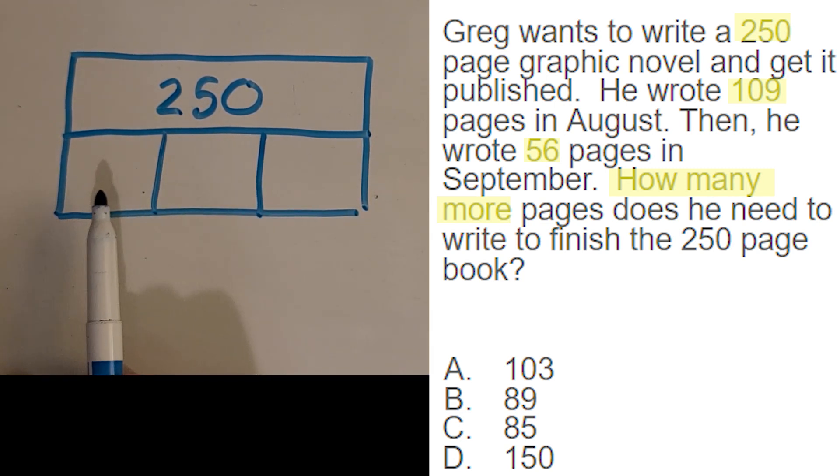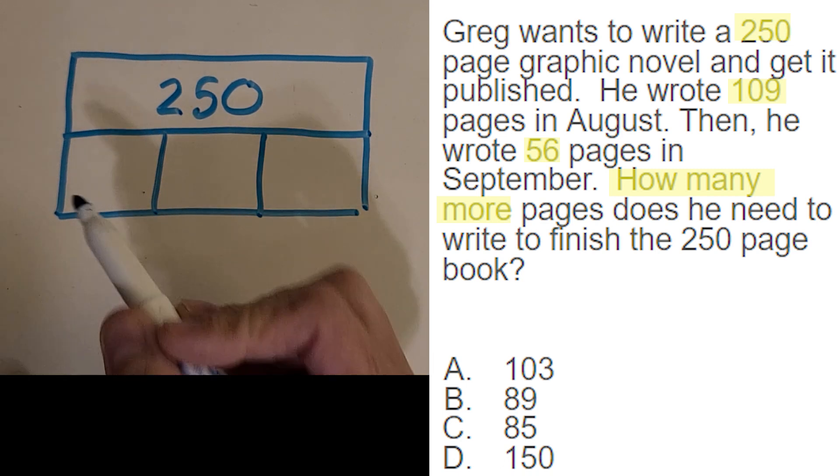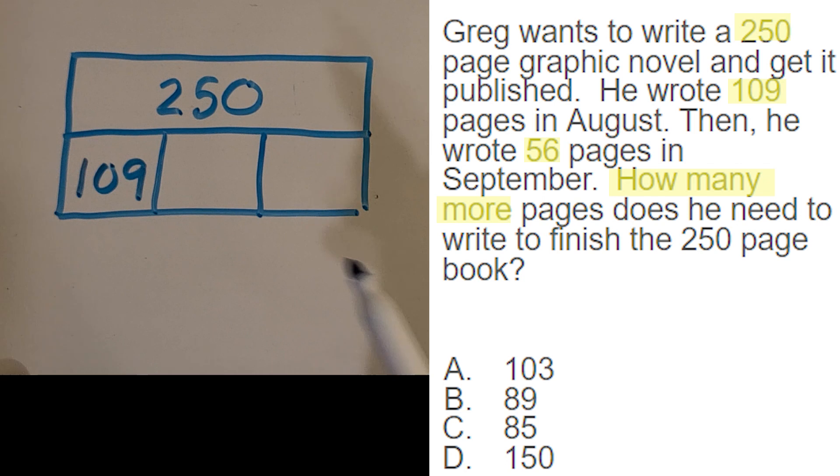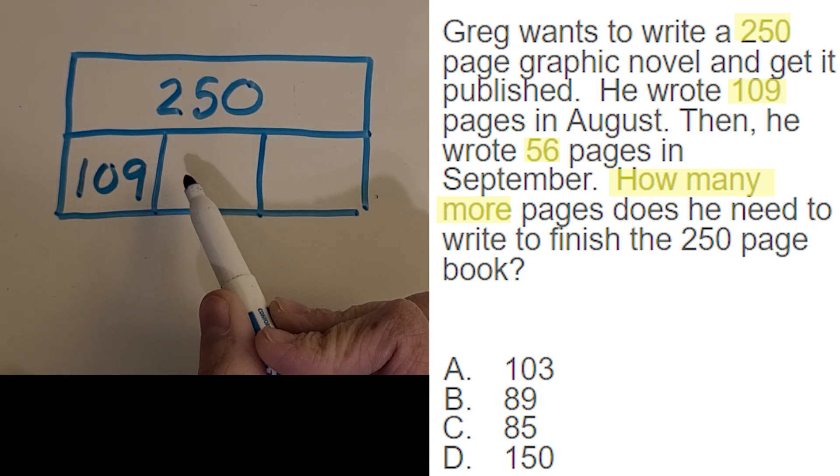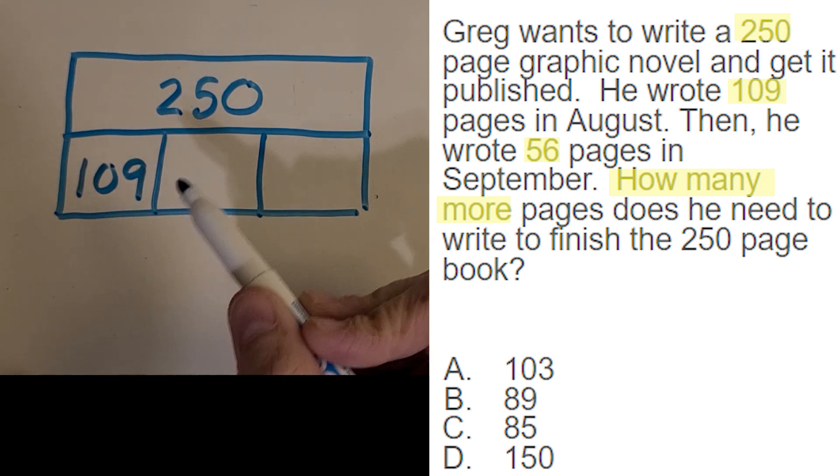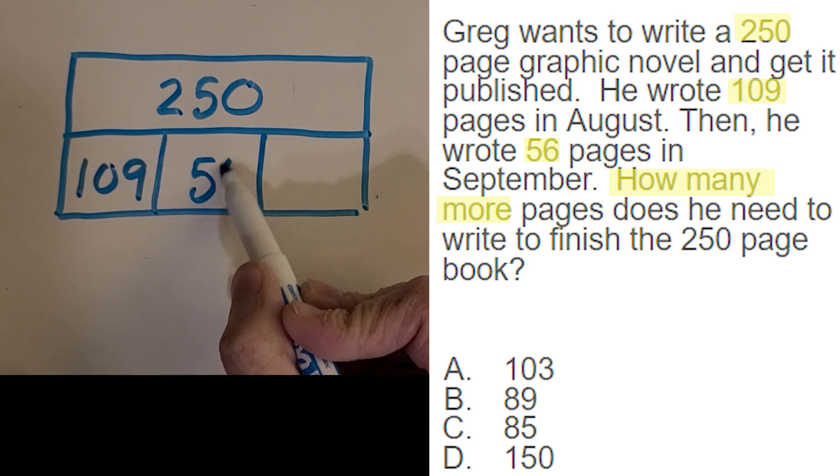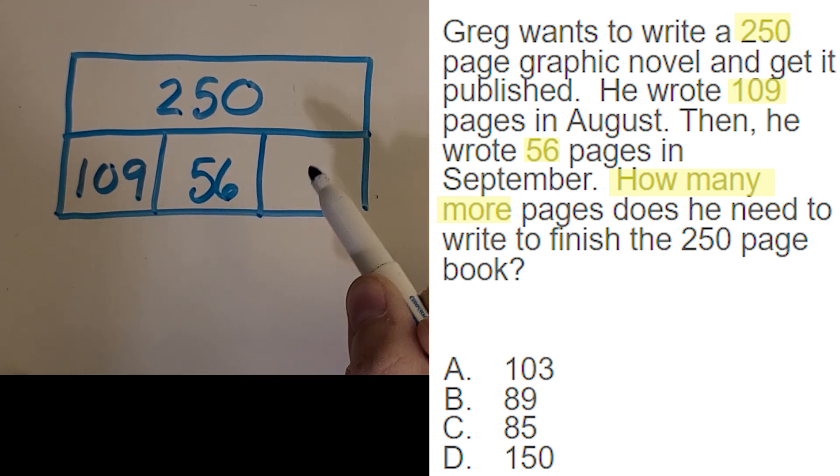So what did he write in August? Great, 109. What did he write in September? You got it, 56. And then this one, we don't know yet, because he needs to write more to get up to that 250.